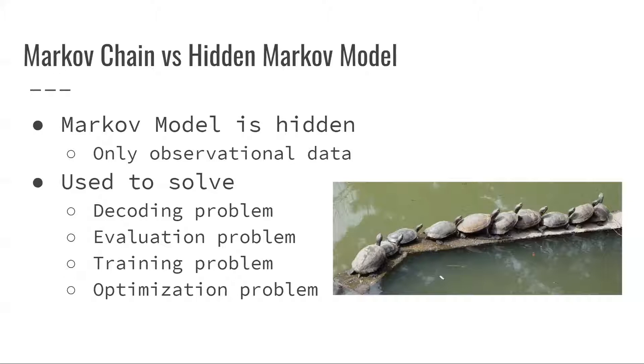First one is a decoding problem, which is given the model parameters and the observation sequence, estimate the most likely hidden state or sequence. The evaluation problem is given the parameters and the observation sequence, find the probability of said sequence. And then the training problem is given an observation sequence, estimate the model parameters. And finally, the optimization problem estimates the observation sequence, state probabilities, and model parameters that maximizes a given observation.